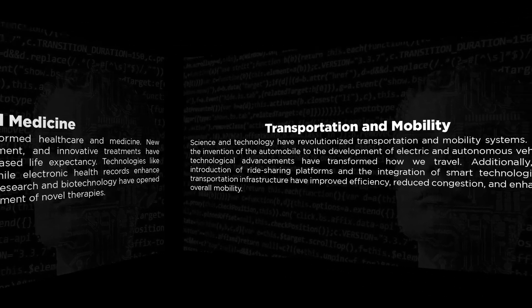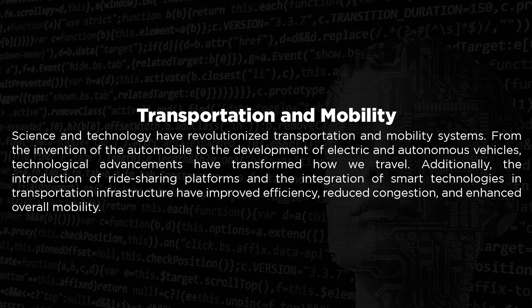The third one: we have transportation and mobility. Science and technology have revolutionized transportation and mobility systems. From the invention of the automobile to the development of electric and autonomous vehicles, technological advancements have transformed how we travel. Additionally, the introduction of ride-sharing platforms and the integration of smart technologies in transportation infrastructure have improved efficiency, reduced congestion, and enhanced overall mobility.